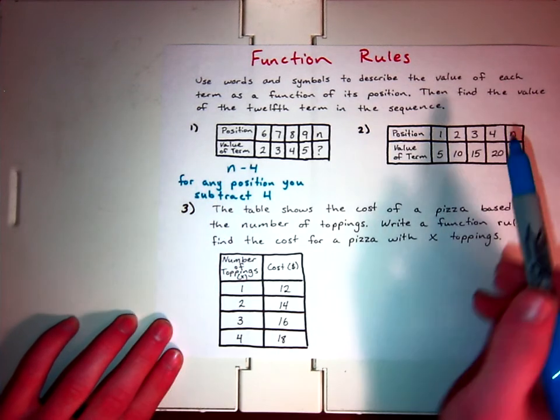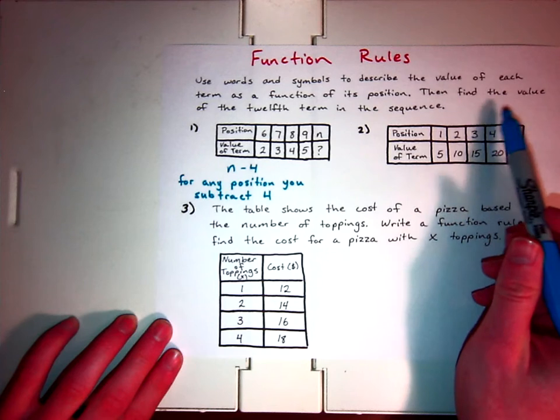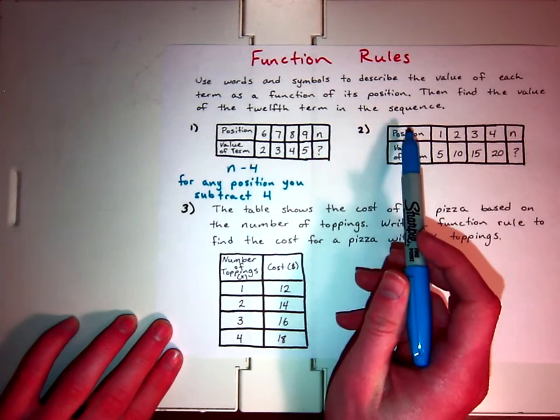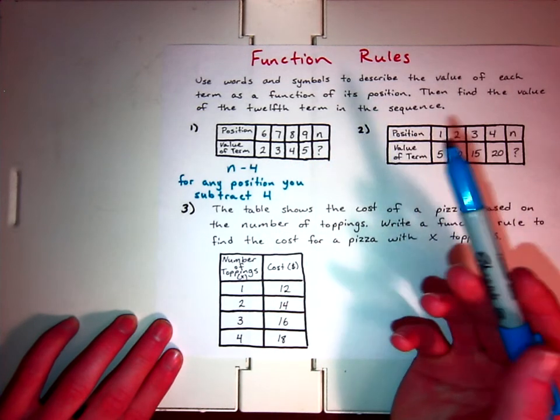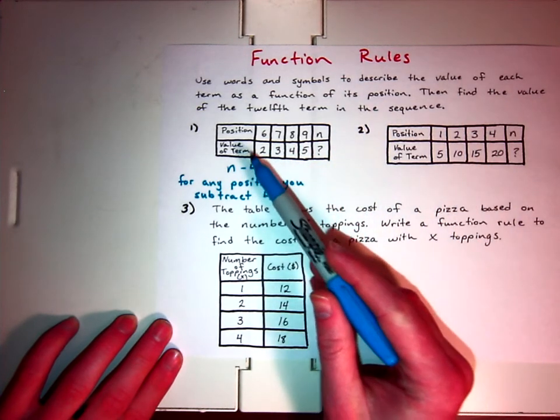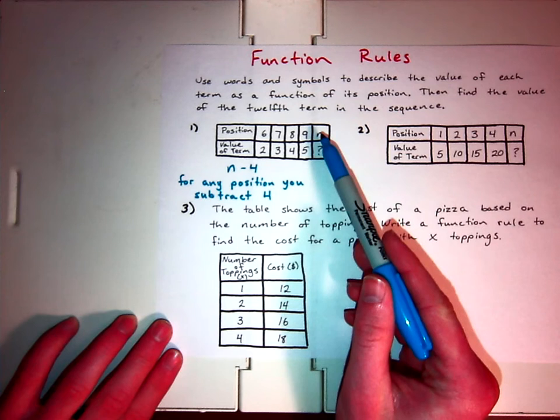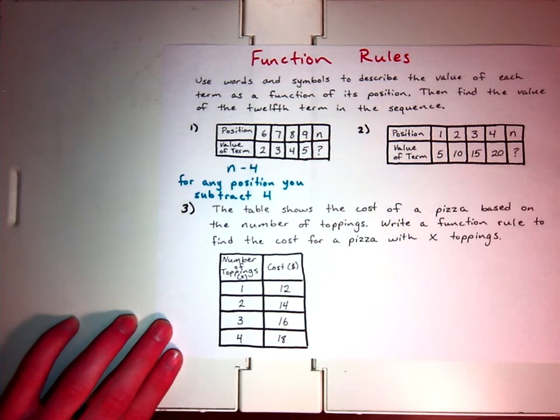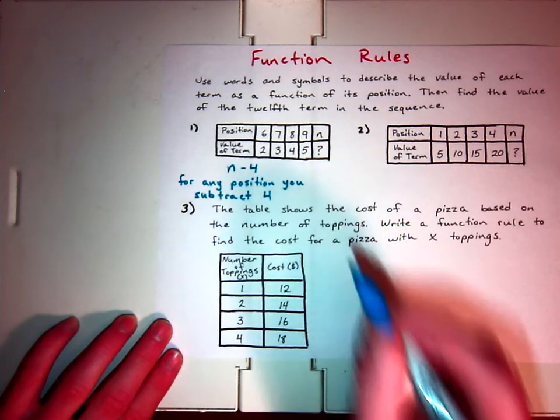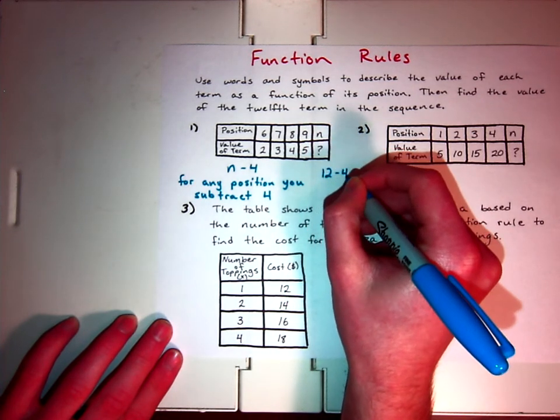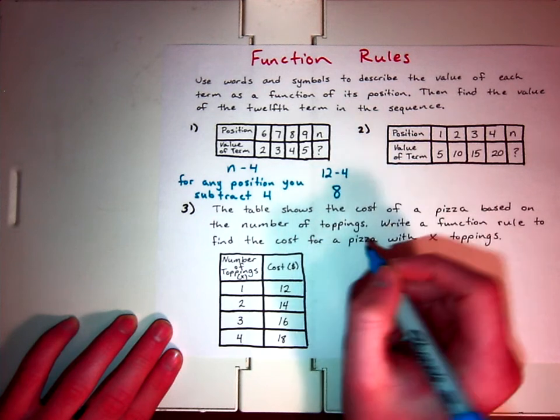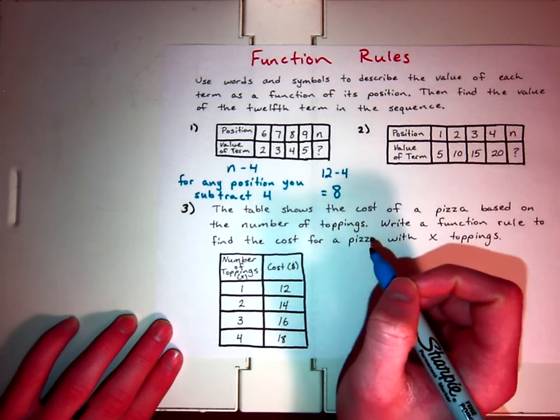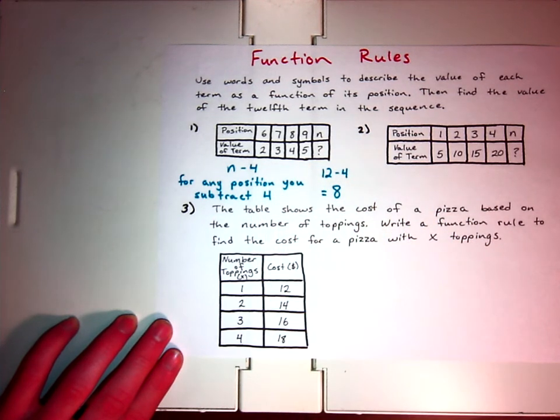Then, we need to finish the second part of this problem. Find the value of the twelfth term in the sequence. If it's the twelfth term, it's saying that it's the twelfth position. So the twelfth number in this function is simply going to be 12 minus four. And so our answer for that one would be eight. When n equals 12, it is going to equal eight.